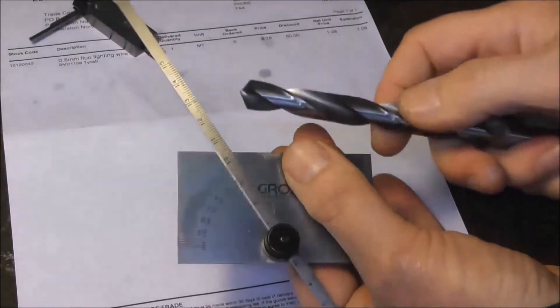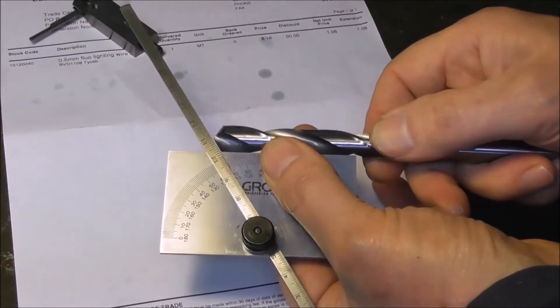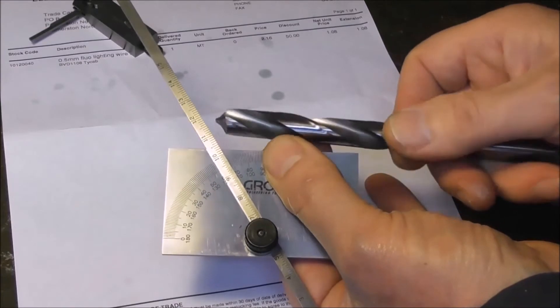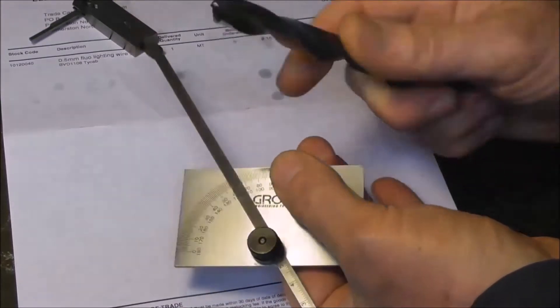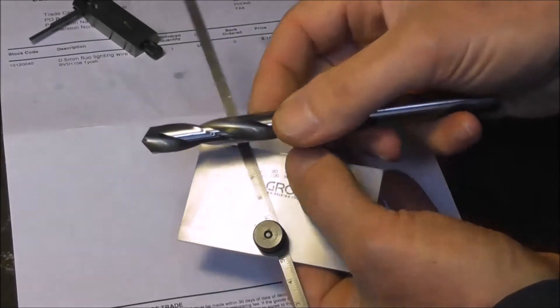Whether you're freehand grinding or checking a new drill, don't assume it's right or that an attachment is correct. Check the angle and how central it is.